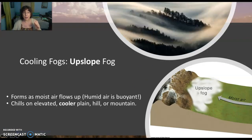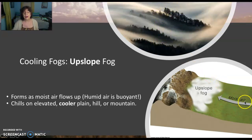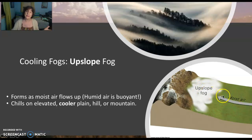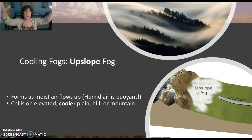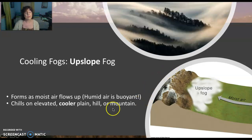Another type of cooling fog is an upslope fog — they're beautiful. You see them in the Great Smoky Mountains and on the east side of the Rockies. Moist air lifts against a topographical barrier; moist air is more buoyant so it finds it easy to lift. As it lifts against the mountain barrier, it cools with altitude and condenses, forming upslope fog.